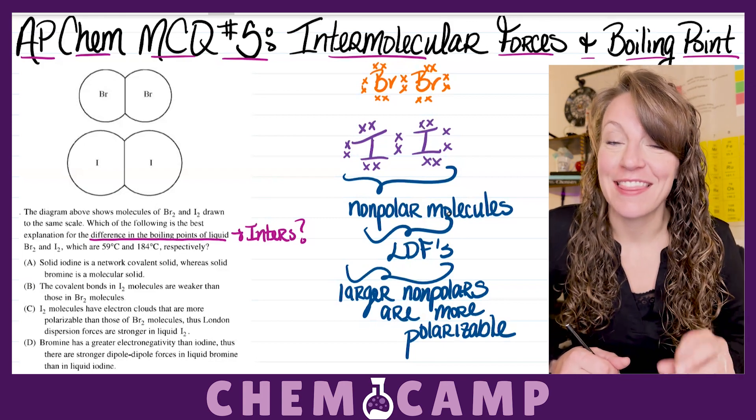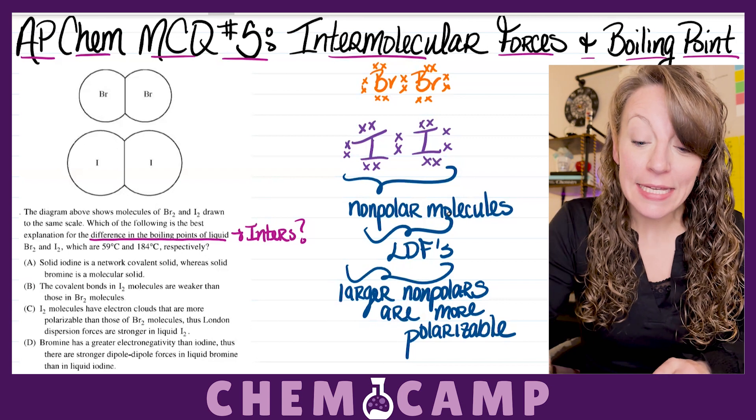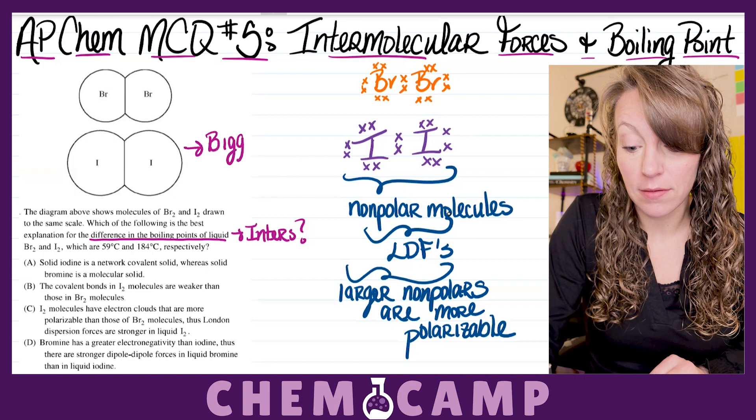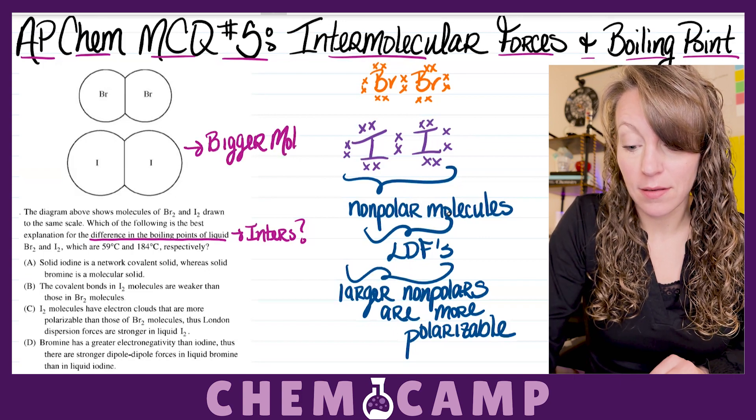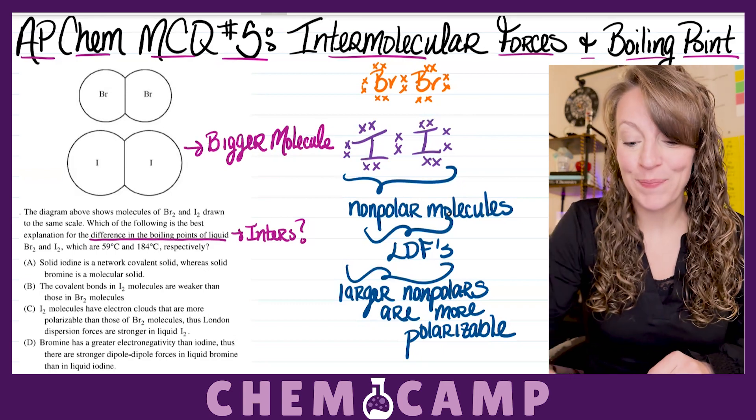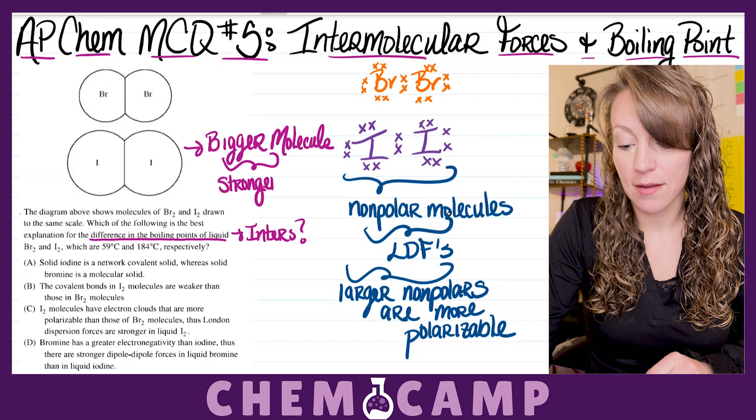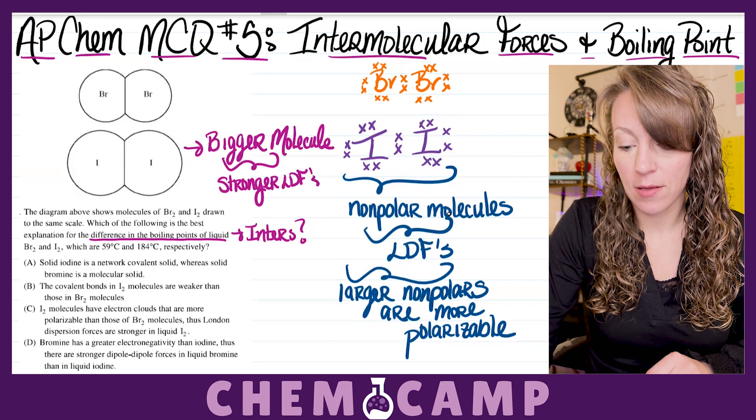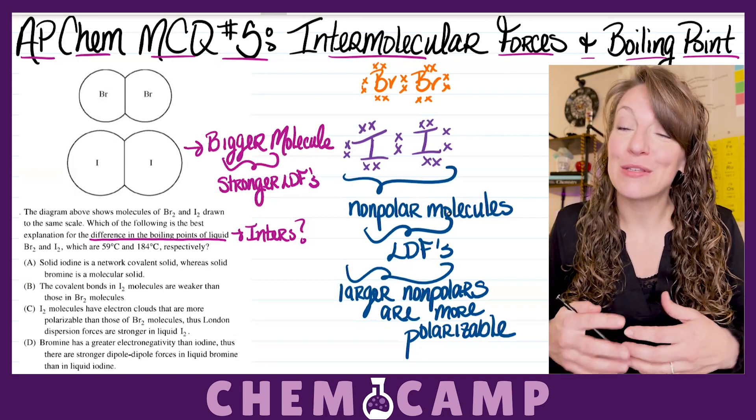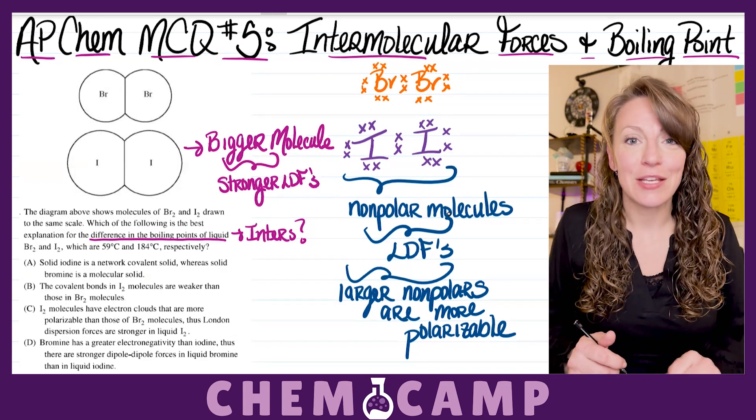Let's take a look at our two molecules then. This is where their diagram comes into play, because they've drawn it to the same scale, which clearly indicates to us that I2 is the bigger molecule. If I2 is the bigger molecule, then it's also more polarizable, which means it's going to have stronger LDFs. Now, the stronger the intermolecular force, then the higher the boiling point, because it's going to require a lot more energy to break those intermolecular forces. So, let's take a look at our options here.